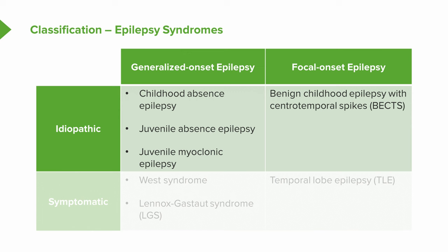The three epilepsy syndromes with generalized onset that are idiopathic are: childhood absence, juvenile absence, and juvenile myoclonic epilepsy. These are idiopathic — we don't know why they occur, there's no underlying insult that causes them, and the seizures tend to be generalized in onset, which will guide treatment decisions.